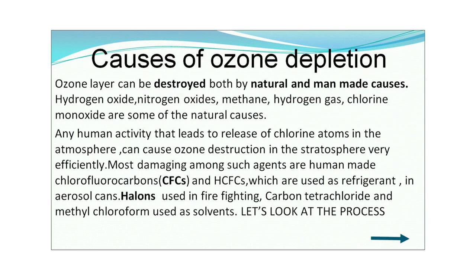Causes of ozone depletion: the ozone layer can be destroyed by both natural and man-made causes. Natural causes include hydrogen oxide, nitrogen oxide, methane, hydrogen gas, and chlorine monoxide. Any human activity that leads to release of chlorine atoms in the atmosphere can cause ozone destruction in the stratosphere very efficiently. Most damaging among these are human-made chlorofluorocarbons (CFCs) and hydrochlorofluorocarbons (HCFCs), which are used as refrigerants and in aerosol cans. Halons used in fire fighting, carbon tetrachloride, and methyl chloroform used as solvents also add to this effect.